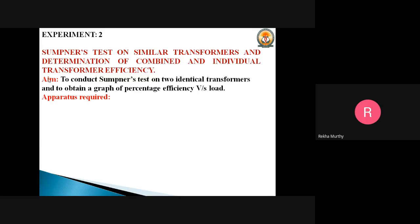The aim of this experiment is to conduct the Sumpner's test on two identical transformers and to obtain a graph of percentage efficiency versus the load. Before we go through this experiment, we should know why we conduct the Sumpner's test. The alternative name for this test is called the back-to-back test.